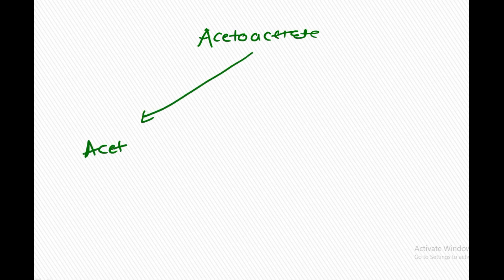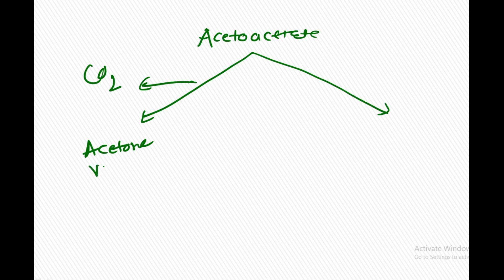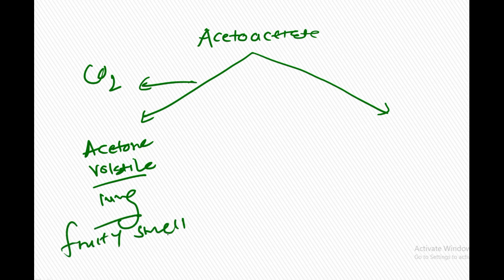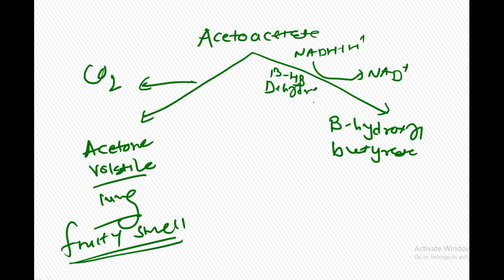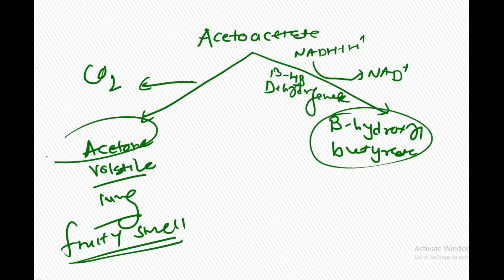Acetoacetate, the primary ketone body, can be converted to acetone by decarboxylation, where CO₂ is removed. Acetone is volatile and can be excreted from the lungs, giving a fruity smell — which is why in uncontrolled diabetes mellitus there is ketoacidosis with a fruity smell. Acetoacetate can also be dehydrogenated to form beta-hydroxybutyrate; NADH + H⁺ is converted to NAD⁺, and the enzyme is beta-hydroxybutyrate dehydrogenase.